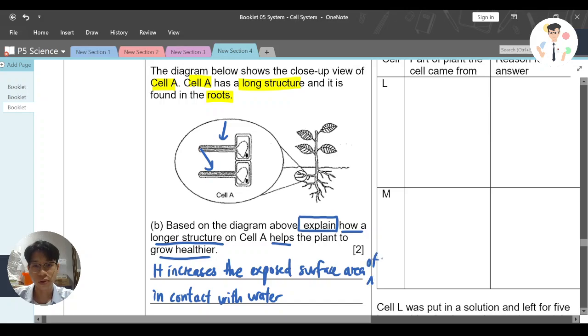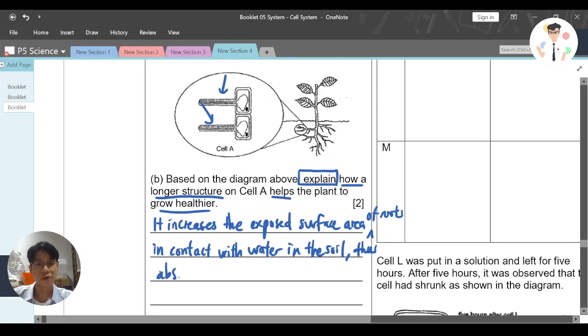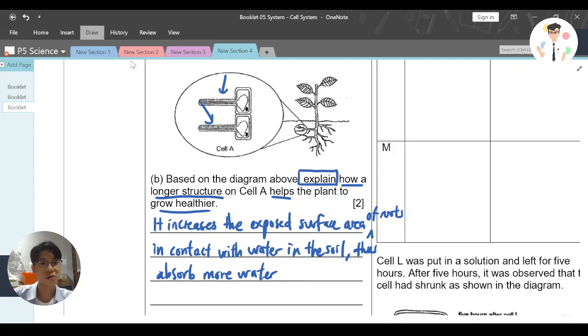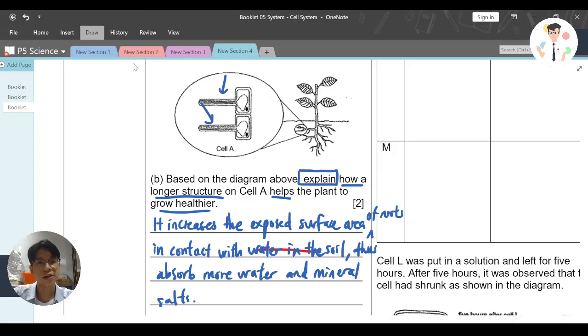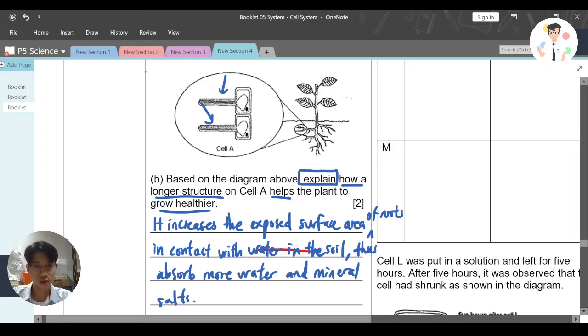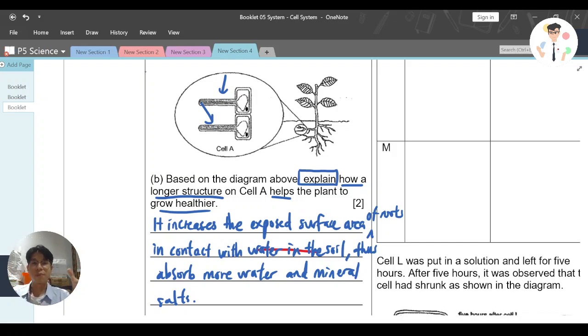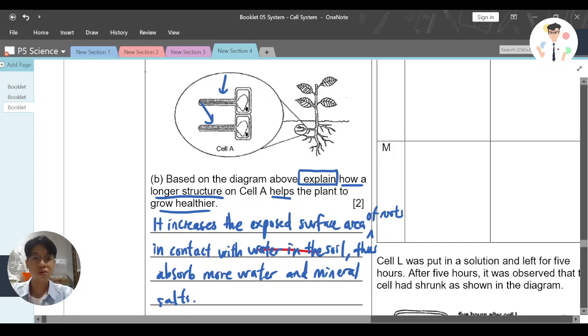I should say increase the exposed surface area of roots in contact with water in the soil, thus absorb more water and mineral salt. Or you can just use the word 'in contact with soil,' that is good enough, then absorb more water. So anyway, you should know its function - longer increases the exposed surface area in contact with soil, absorb more water. Don't just say absorb more water. That is not scientific enough. I think that's good enough for this question.